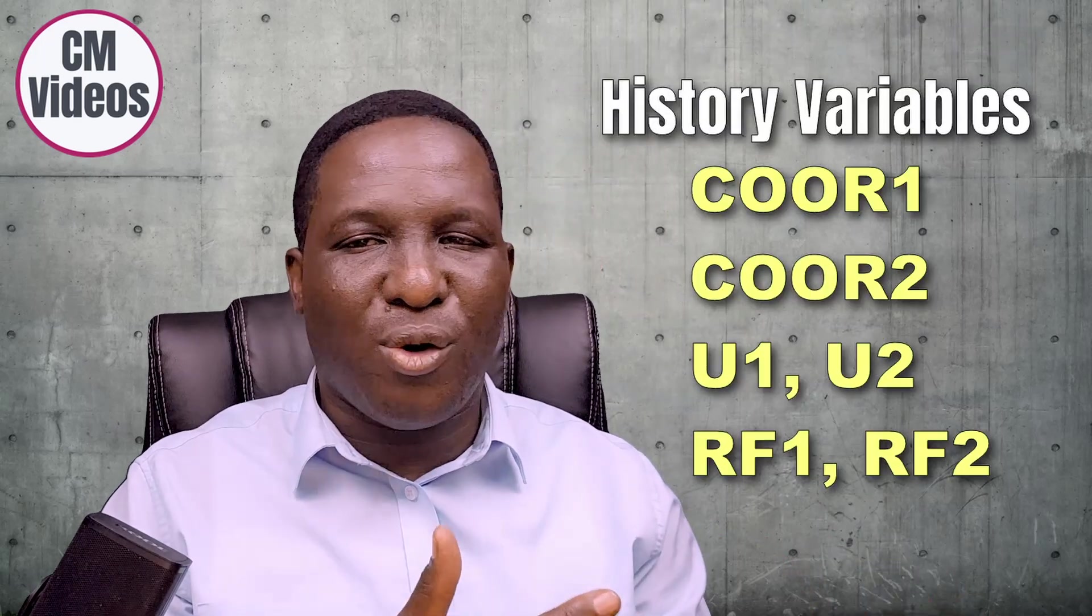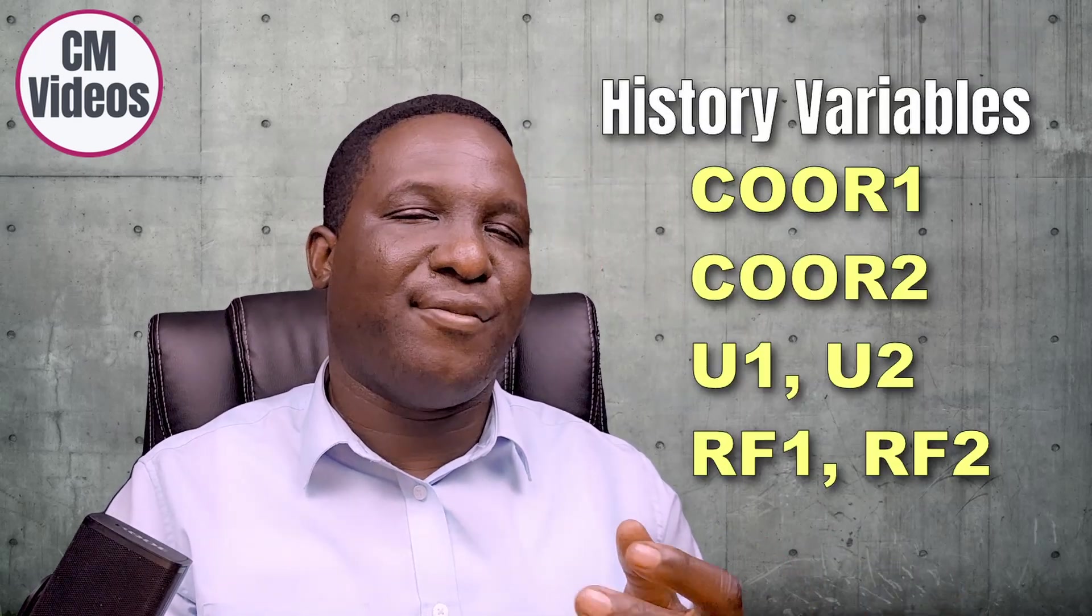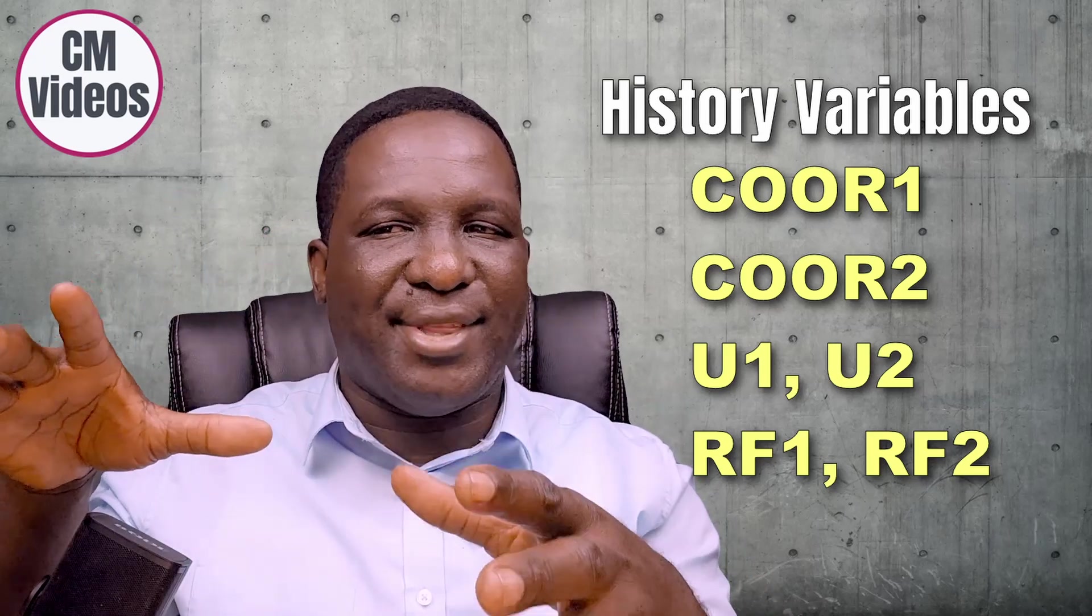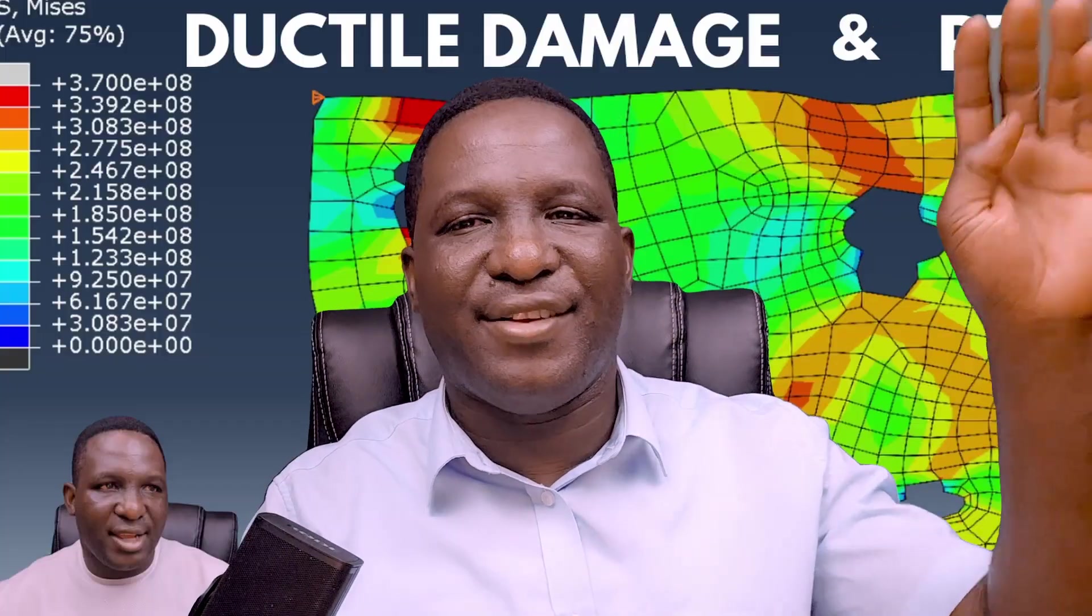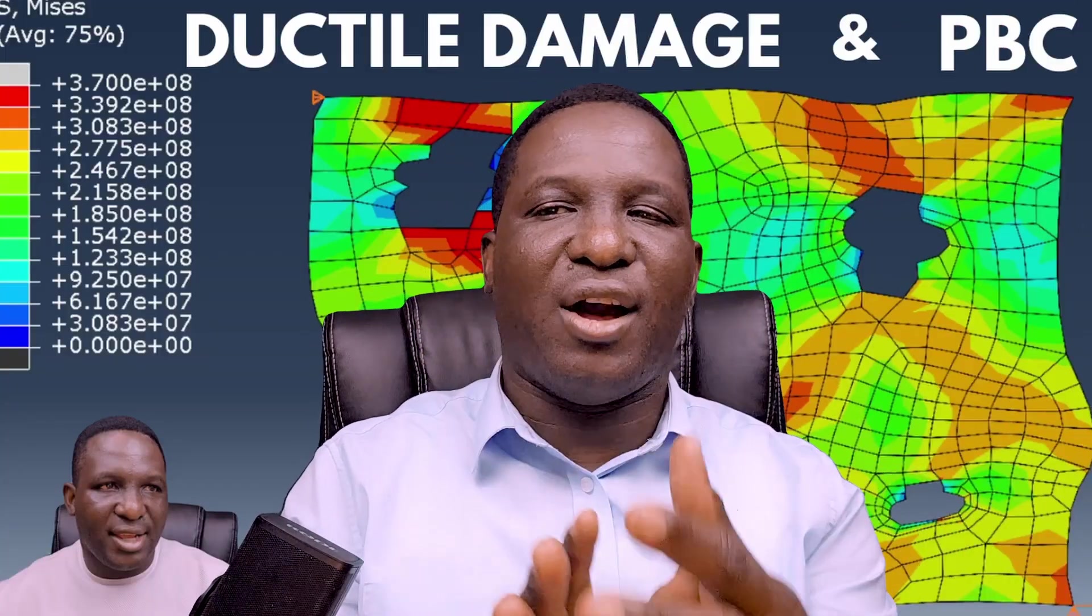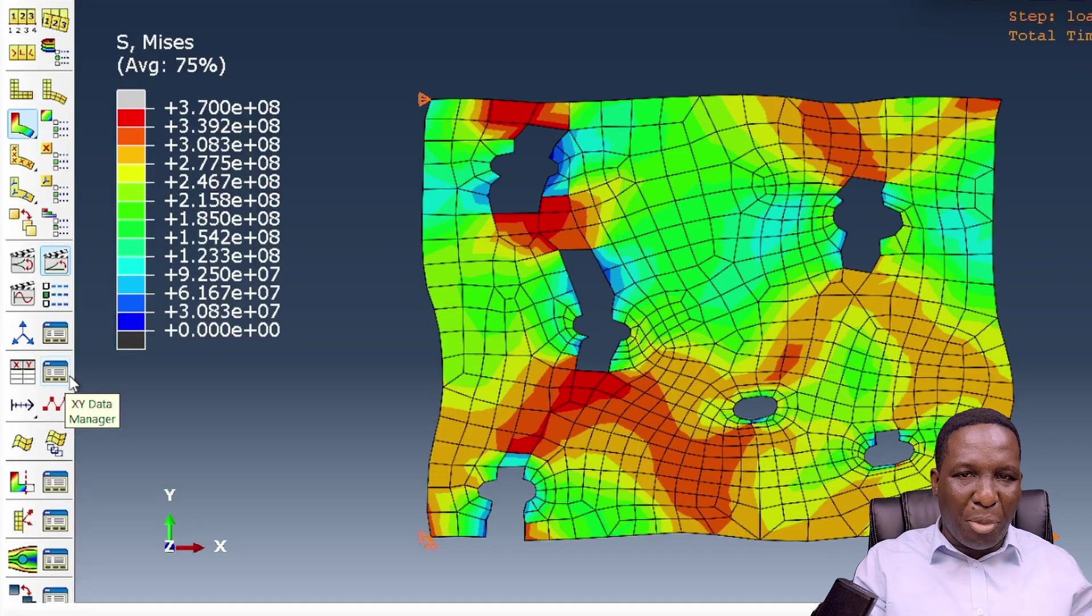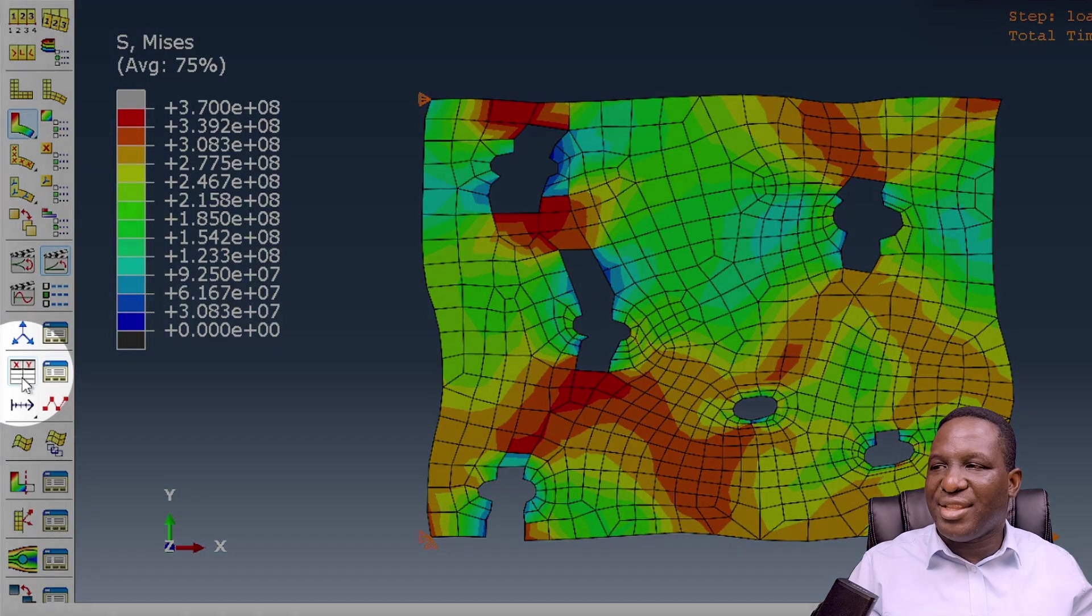While we were setting up the model, we requested coordinate 1, coordinate 2, u1, u2, rf1, and rf2. If you want to see how this model was set up and how we got to this position, there's a video I've made that shows you extensively how to create this sort of model. We're going to operate on this model to generate stress-strain data.